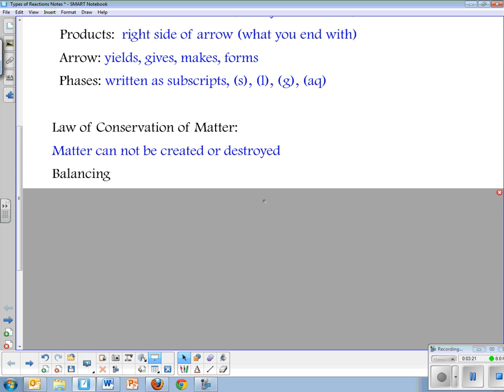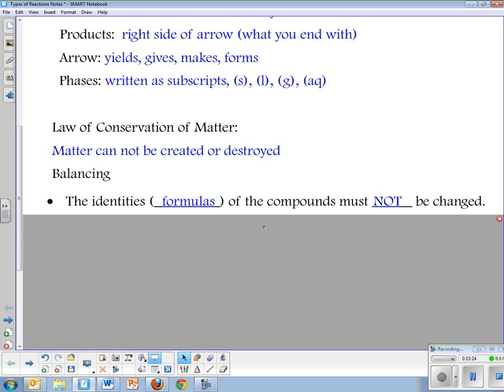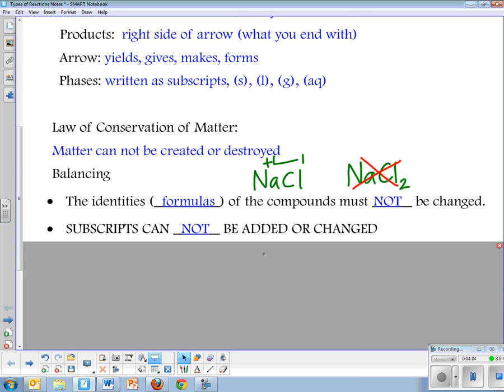So balancing, there are some rules, things to follow. The first is that the identities of the compounds do not change. Your formulas that we've been doing this past chapter will stay exactly the way they are. For instance, if we're talking about sodium chloride, NaCl - there's one sodium and one chlorine - that will never change. You will never do something like NaCl2. This doesn't exist. You can't put a 2 there. We figured out last chapter why it's 1 and 1, because it's plus 1 and minus 1. Subscripts cannot be added or changed. You can never change subscripts or add them or remove them.